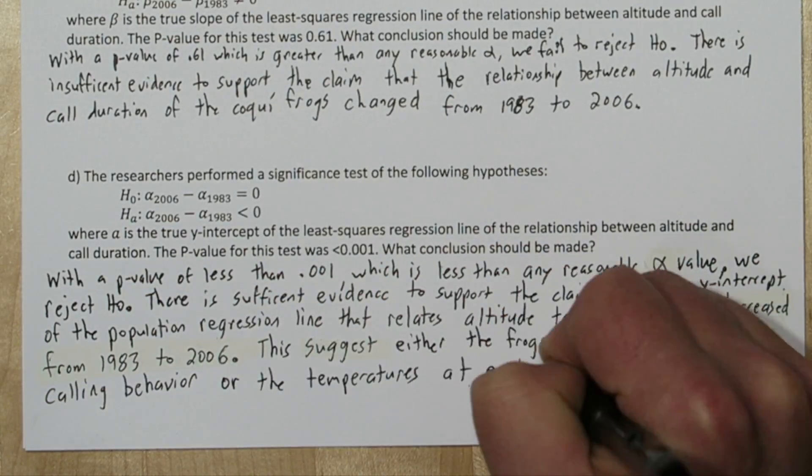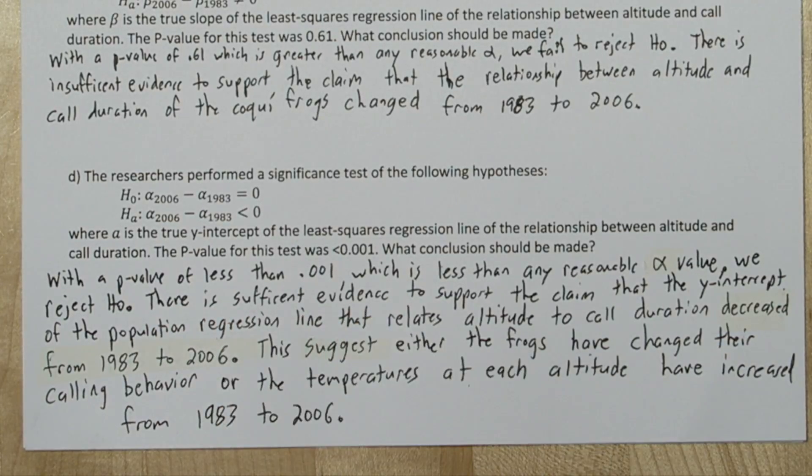This suggests either the frogs have changed their calling behavior, or the temperatures at each altitude have increased from 1983 to 2006. And that last suggestion is actually what the researchers concluded.